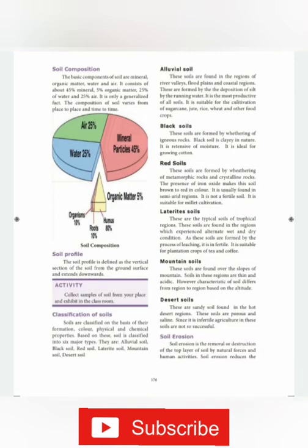Soils are classified into many types: alluvial soil, black soil, red soil, laterite soil, mountain soil, and desert soil. Alluvial soil is found in the regions of river valleys, flood plains, and coastal regions. It is suitable for the cultivation of sugarcane, jute, rice, wheat, and other food crops. Black soil is formed by the weathering of igneous rocks; it is clay in nature and is ideal for growing cotton.